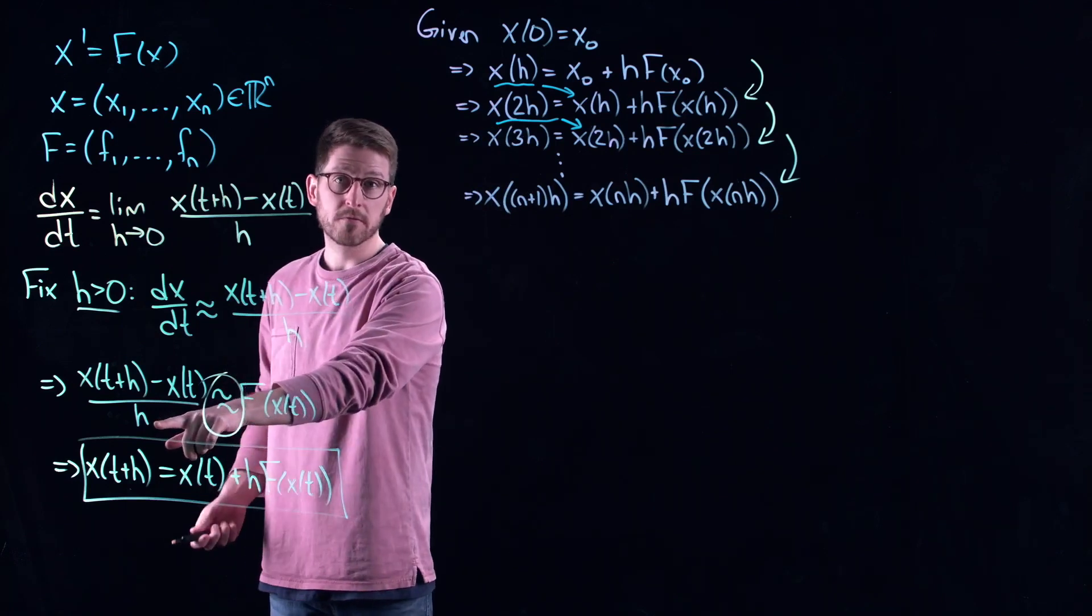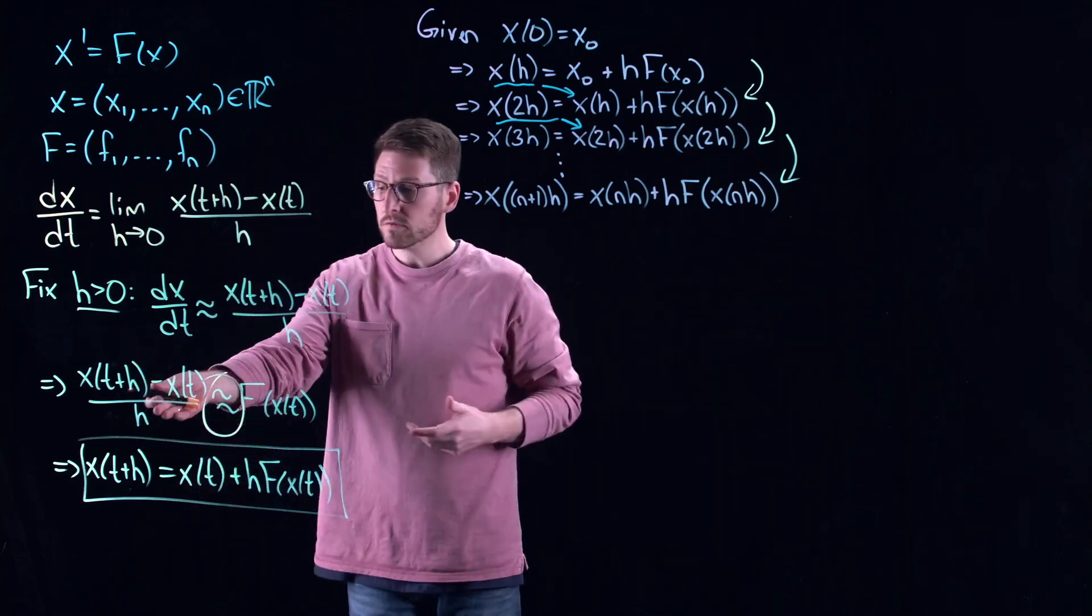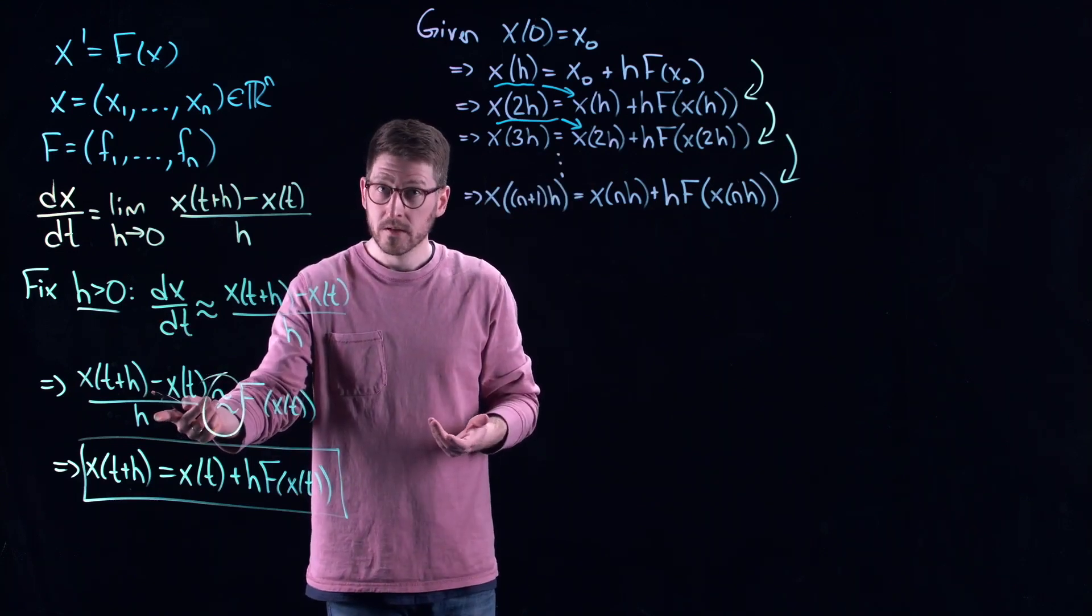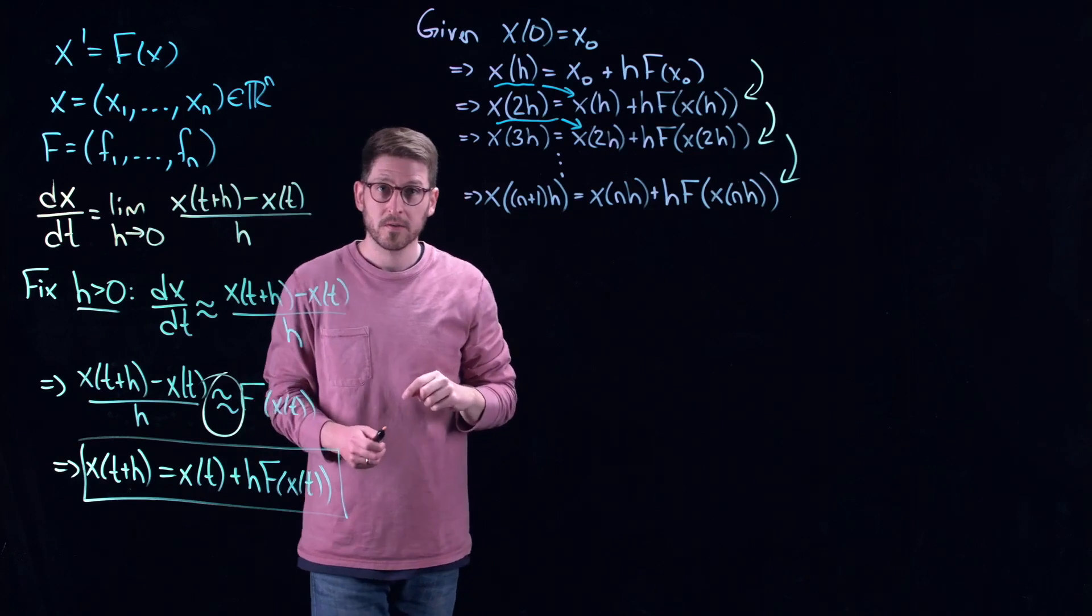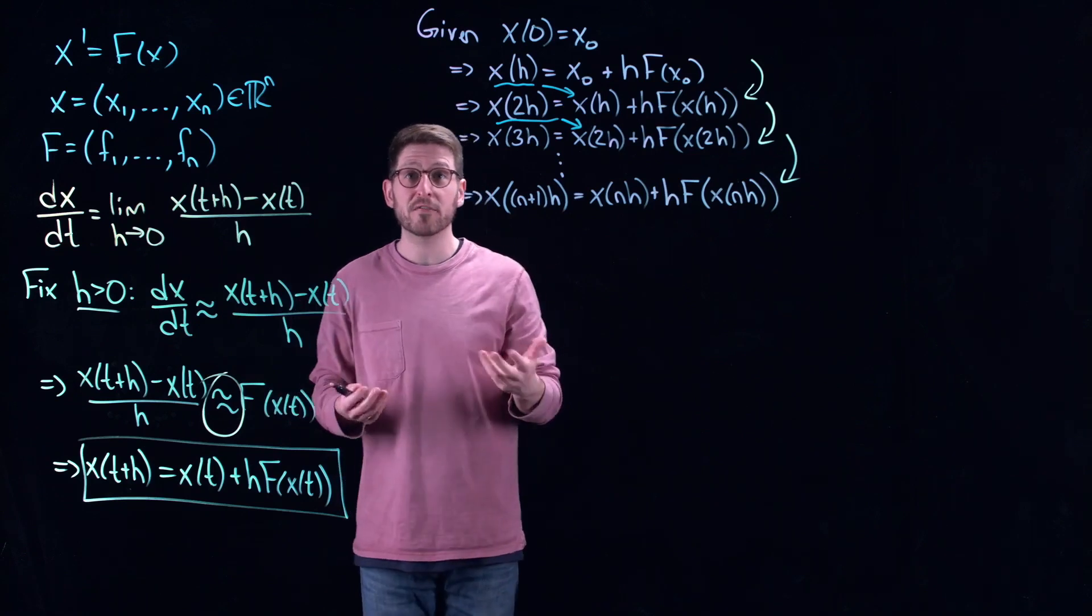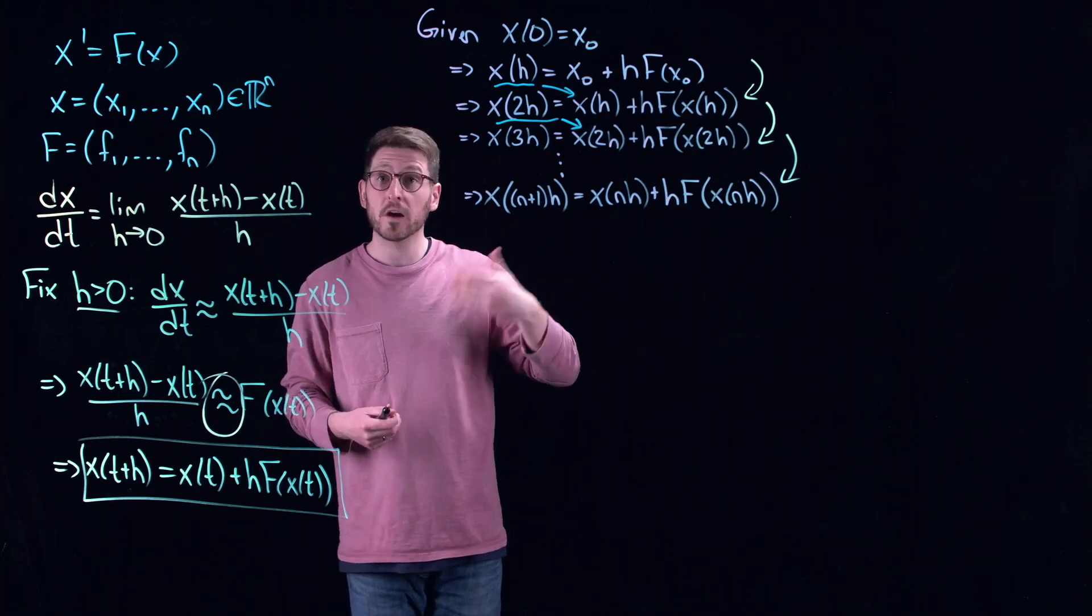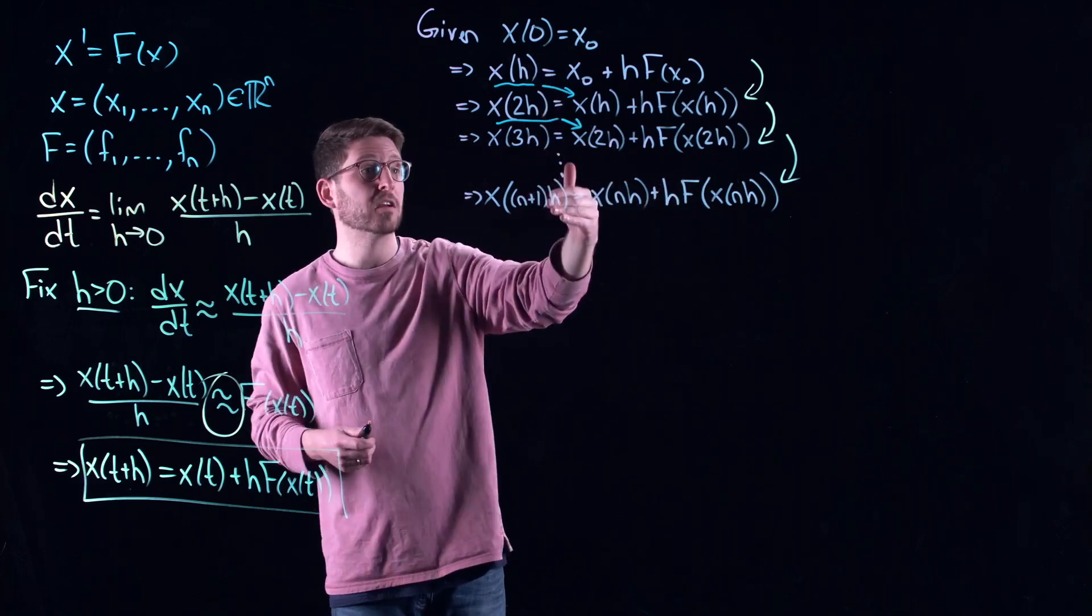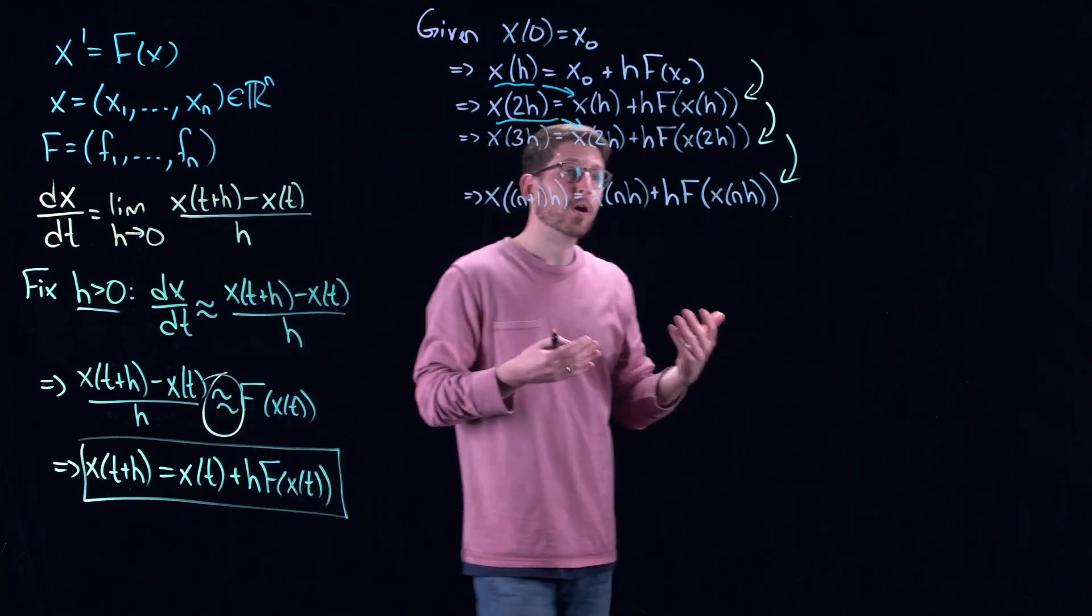It means that every time you implement this thing, you are going to have a little bit of error. It's not going to be the exact solution to the differential equation. But now think about what happens. You sort of cascade the error forward. I know exactly where I started, but now I have a little bit of error in approximating where I am h units in the future. Then I put that little bit of error in, and I approximate two h units in the future.